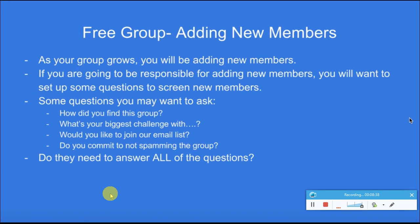You also want to make sure new members commit to not spamming the group and that they're aware of the rules. Decide which questions they must answer to be admitted. One of the most important screening questions is about whether they intend to spam. If someone answers no — meaning they intend to spam — I most of the time won't add them into the group at all, unless I think they completely misinterpreted the question.